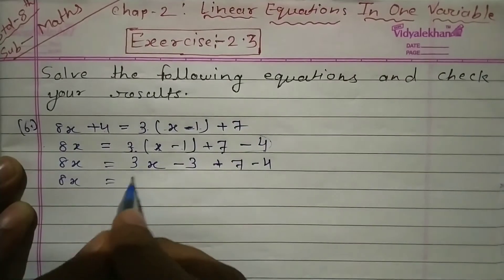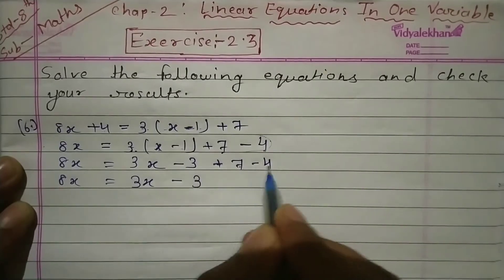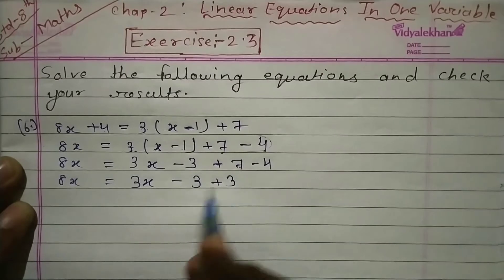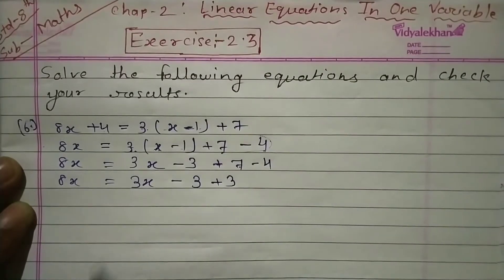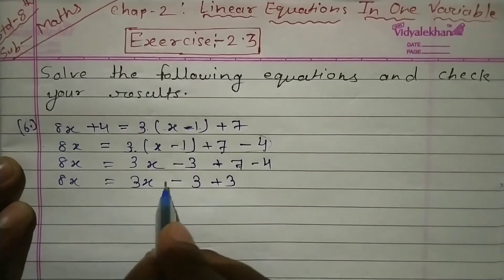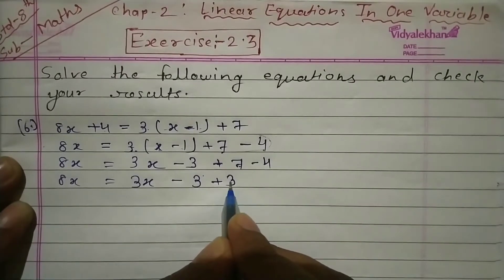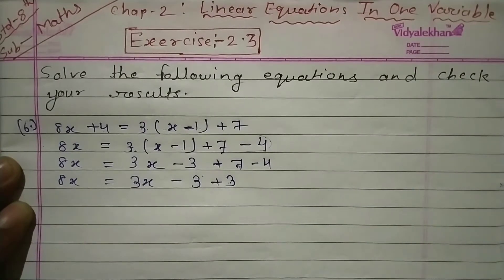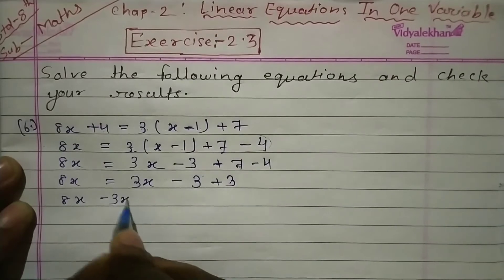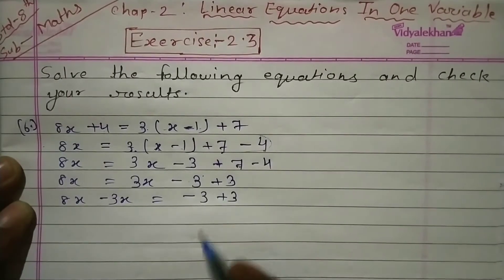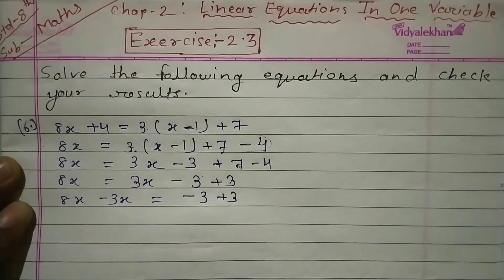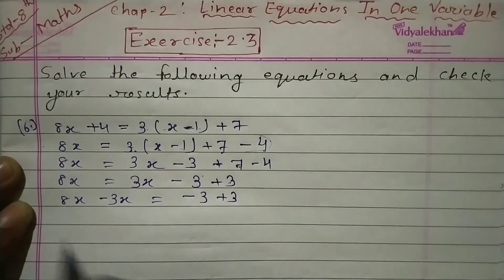8x = 3x - 3 + 7 - 4। देखो 7 - 4 = plus 3 आएगा। तो 8x = 3x - 3 + 3। यहाँ minus 3 और plus 3 क्या हो जाएंगे? 0 हो जाएंगे। तो इसको इस side लाओ: 8x - 3x = 0। 8 - 3 = 5, तो 5x = 0।